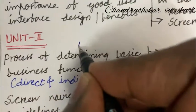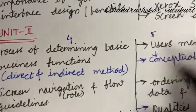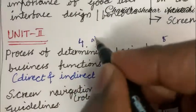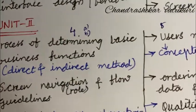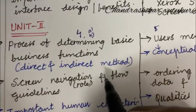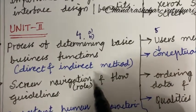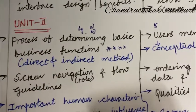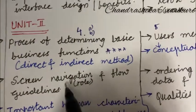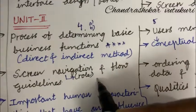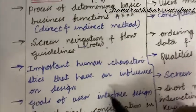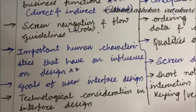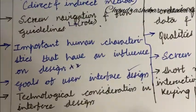I am going to work out the 4th question as well as the 5th question. Do not expect a direct 10 mark. It is a combination of A, B all the time in human-computer interaction. Process of determining basic business functions in form of direct and indirect method which I have kept on the top may be one of the important questions. Screen navigation and flow guidelines as well as screen navigation role may be a short question. Important human characteristics that have an influence on design, explain this term. The goals of user interface design may be a short question.